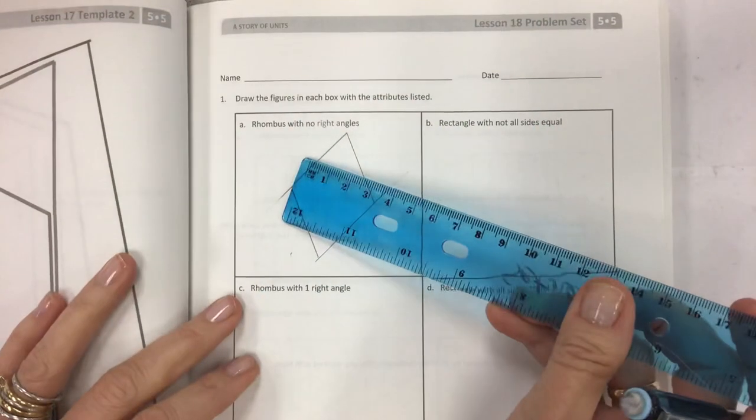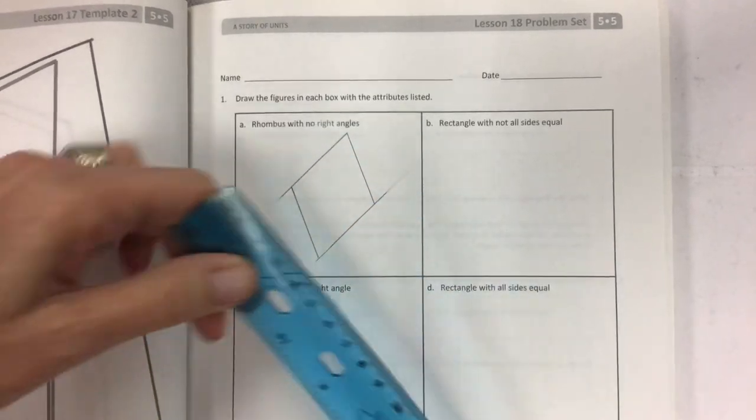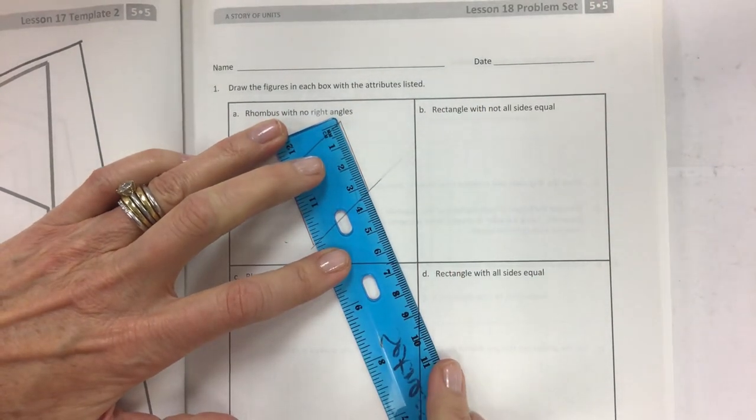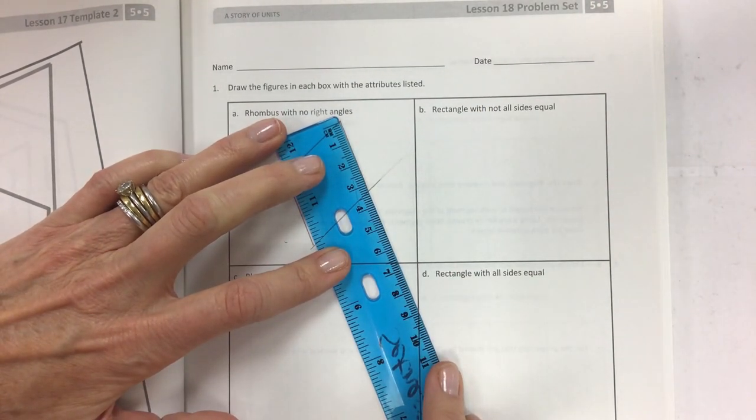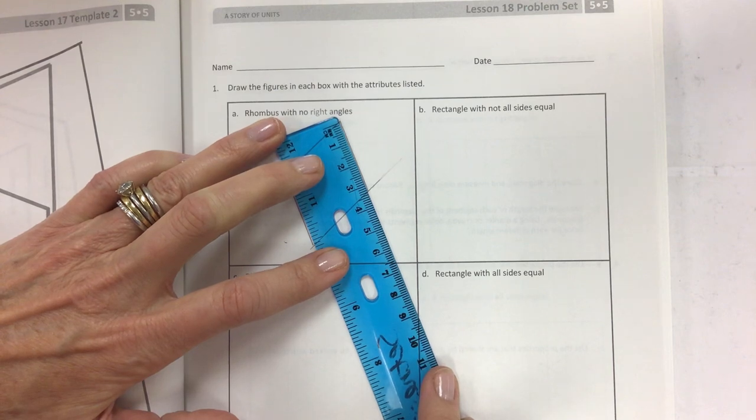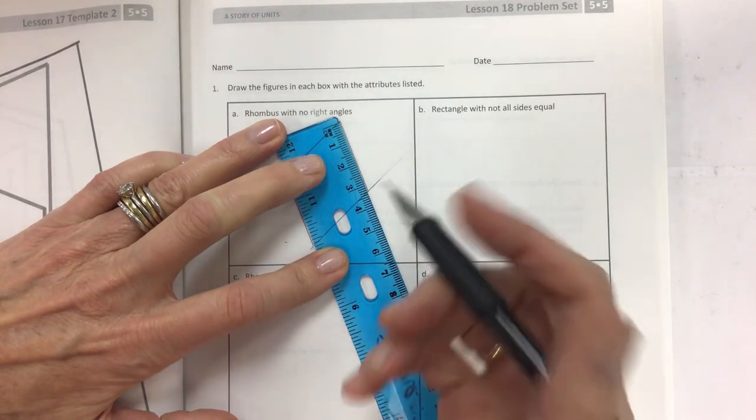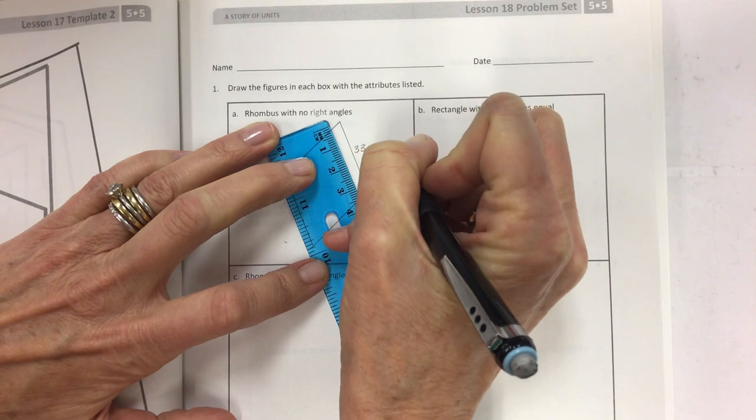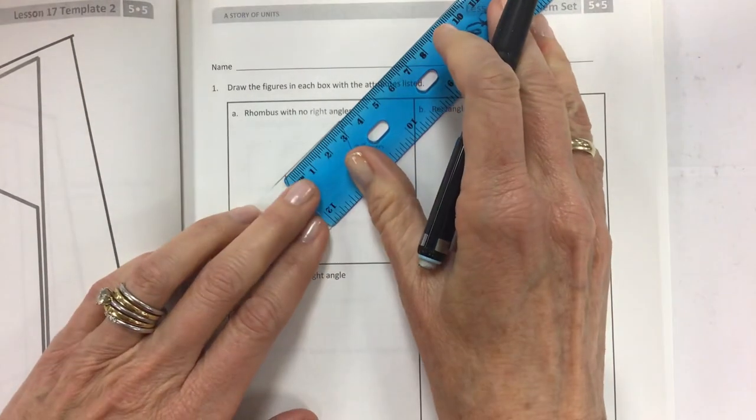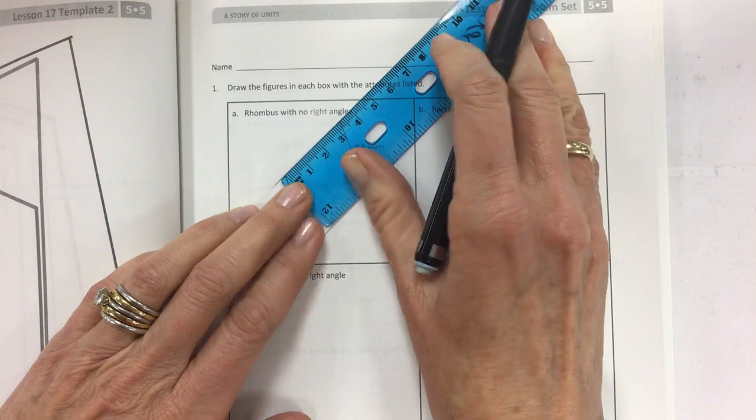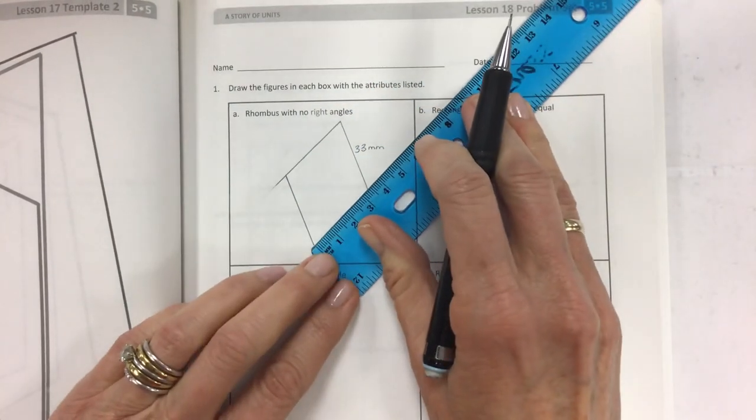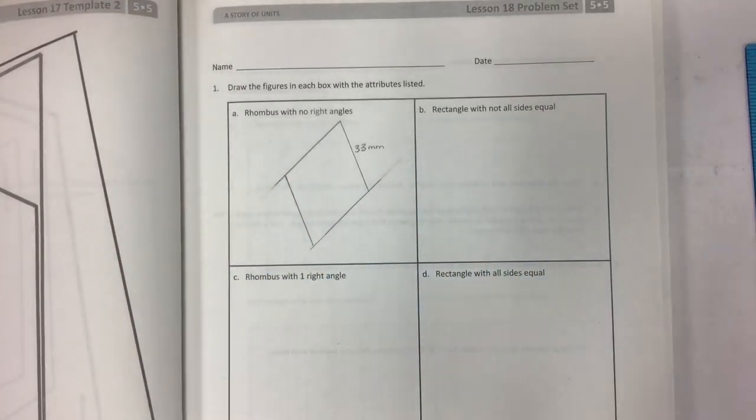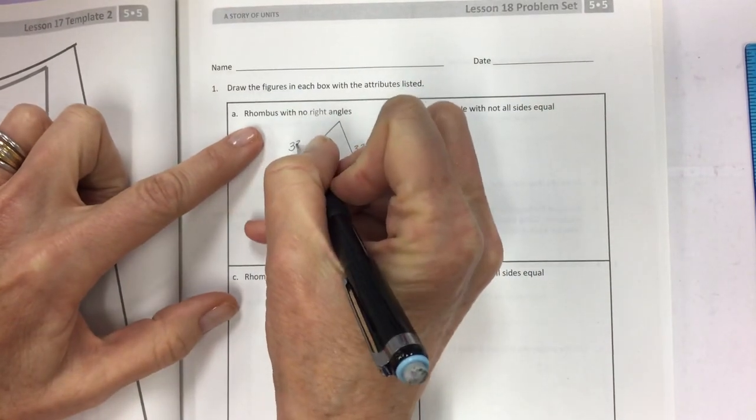And let's use our centimeter side to measure. So put that right at the zero. And it's not really relevant what the measurement is. It can be anything that you created. And so I'm going to use millimeters to be precise. It's about 33 millimeters. You could do 3.3 centimeters. That is equivalent. And that's 33, and that's 33, and that's 33. So we have a rhombus here, because all the sides are 33 millimeters.